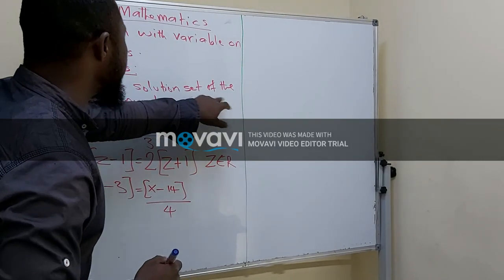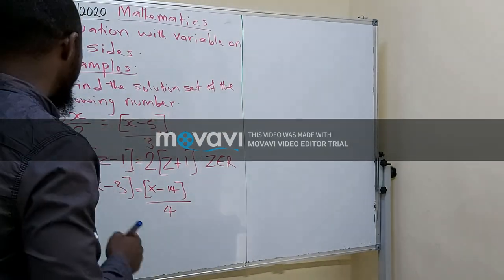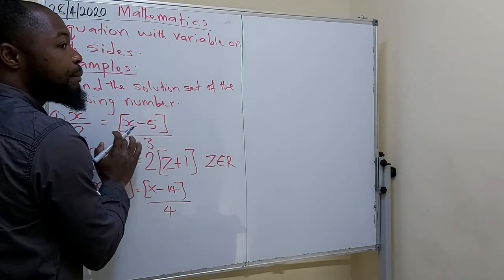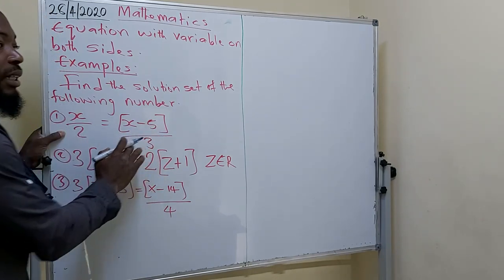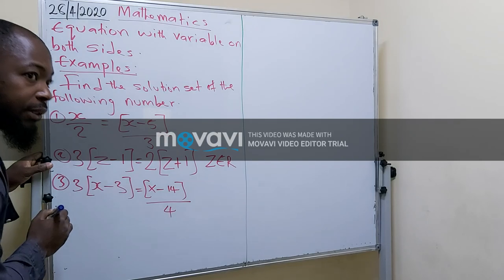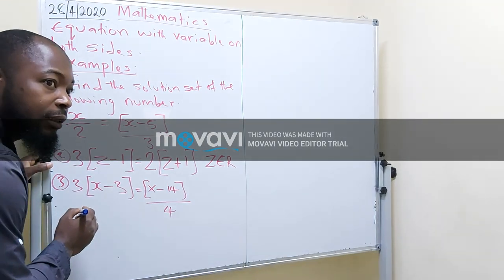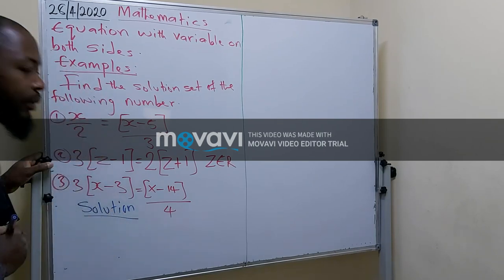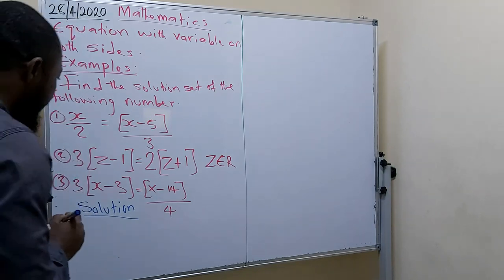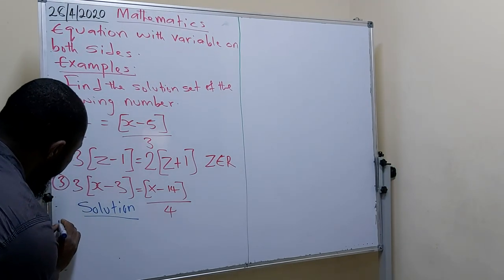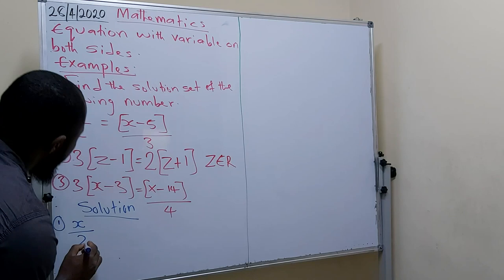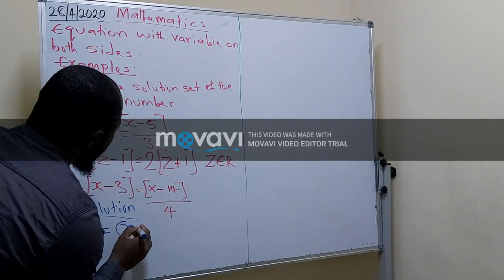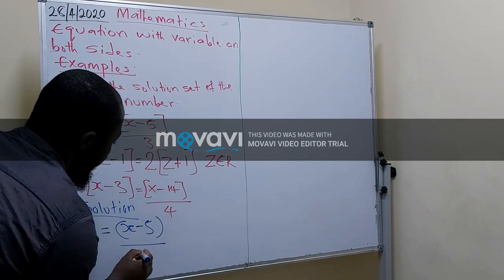Find the solution set of the following. The first question: you have x over 2 equals open bracket, x minus 5, close bracket, over 3. To solve this one, we write: Solution. Number 1, we have x over 2 equals open bracket, x minus 5, close bracket, over 3.